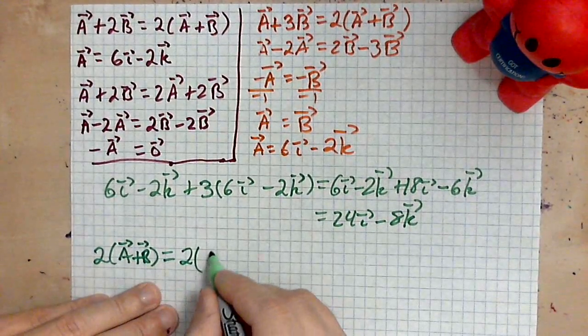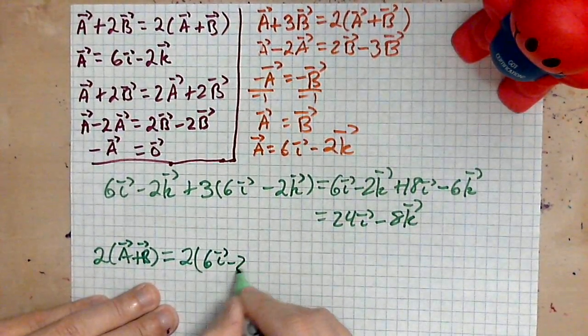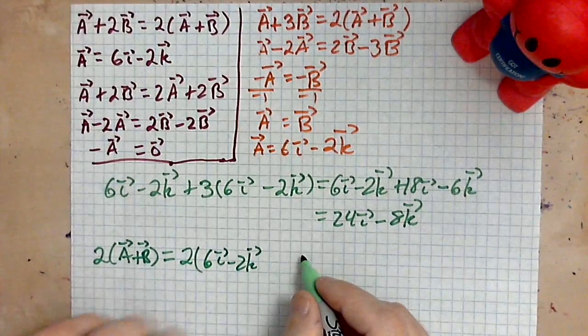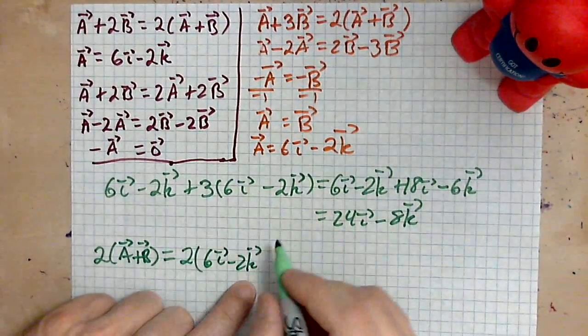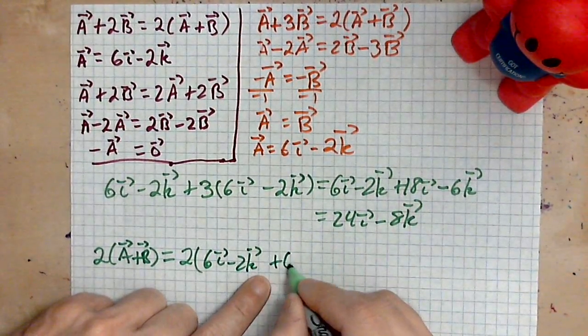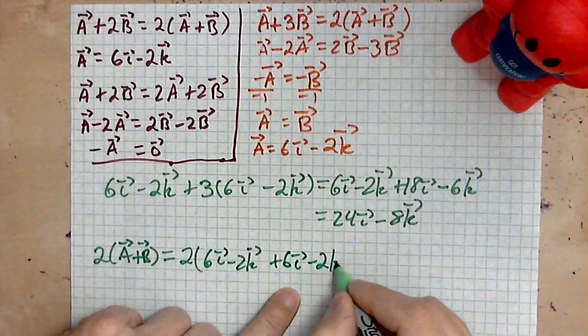Okay, so we have the following: 2 times, a is defined to be 6i minus 2k, and to what we will add b, but b is the same thing, so it's plus 6i minus 2k.